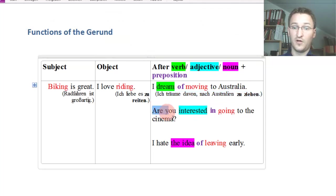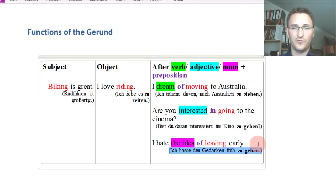And then we've got 'are you interested in going to the cinema?' Hast du Interesse daran, ins Kino, guess what, zu gehen? I hate the idea of leaving early. Ich hasse den Gedanken früh zu gehen. This type of translation is called zu-infinitive and it is often used to translate the gerund.